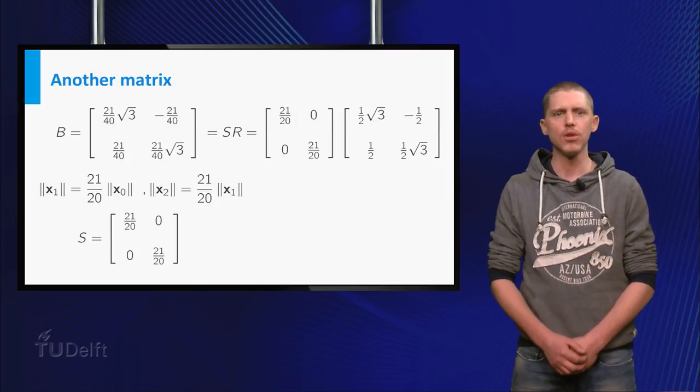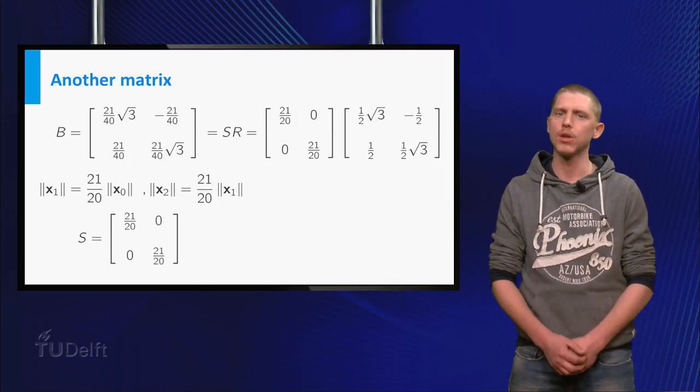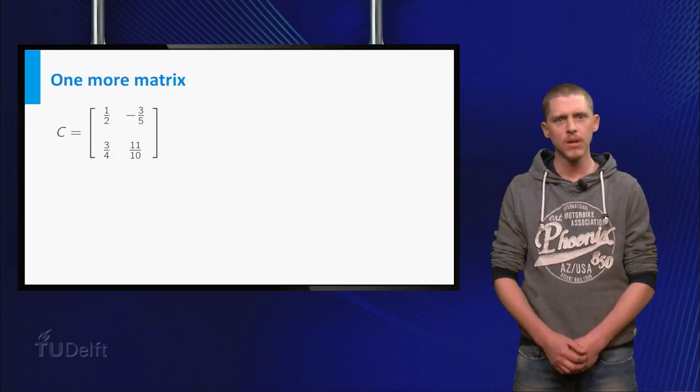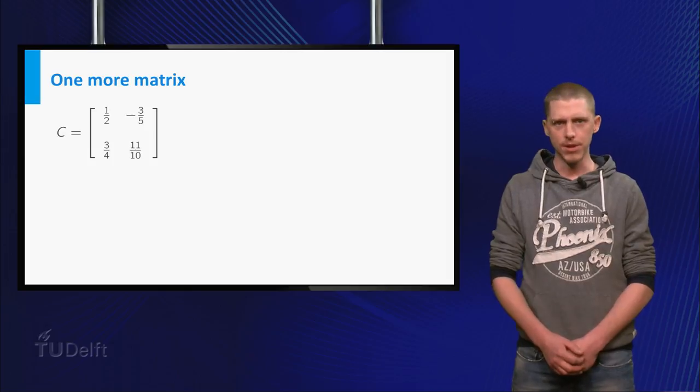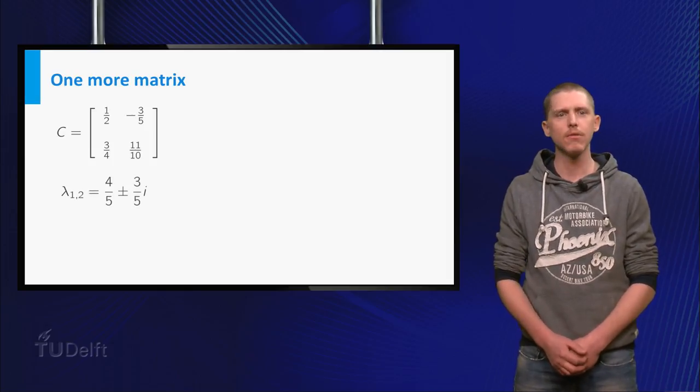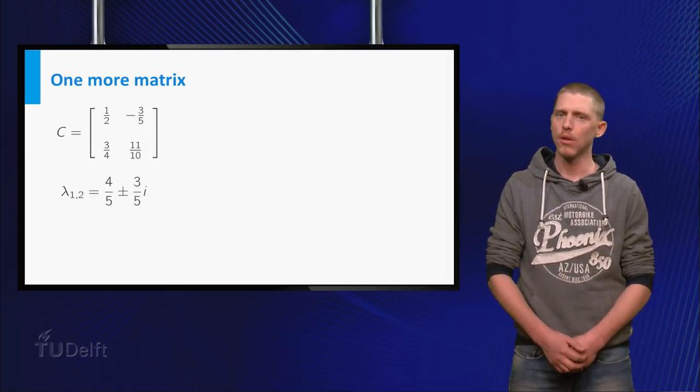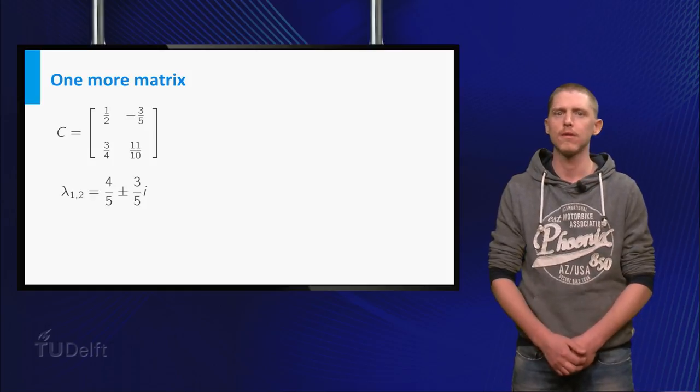Would this conclusion hold in general for 2 by 2 matrices with complex eigenvalues? Let's consider another example. Have a look at this matrix C. This matrix has eigenvalues 4 over 5 plus or minus 3 over 5 times i.